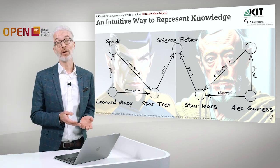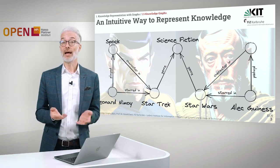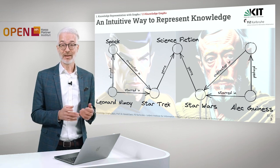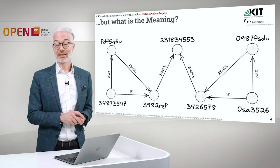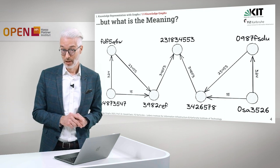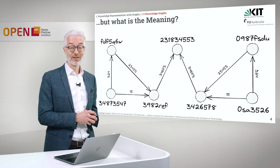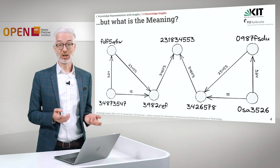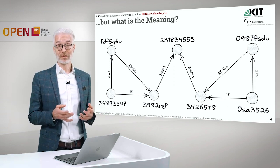So besides Leonard Nimoy, who played Spock in Star Trek, we have also introduced Alec Guinness on the other side, who was playing Obi-Wan Kenobi in Star Wars. Based on that example, if I show you now the following, could you guess the meaning too? And this exactly is the situation that the machine is in — the machine does not necessarily know who Leonard Nimoy is.